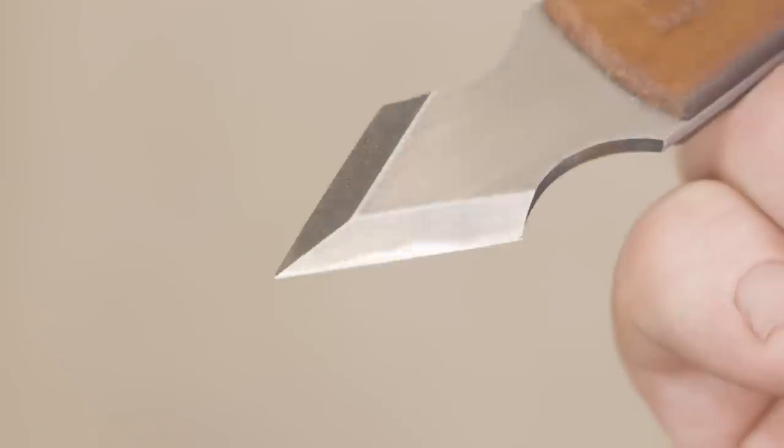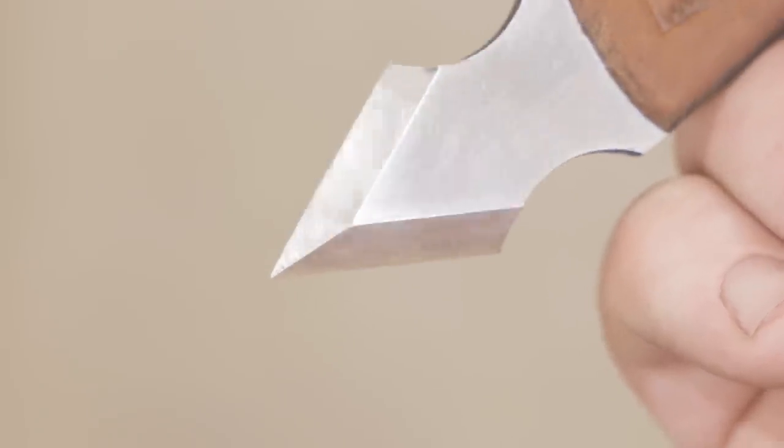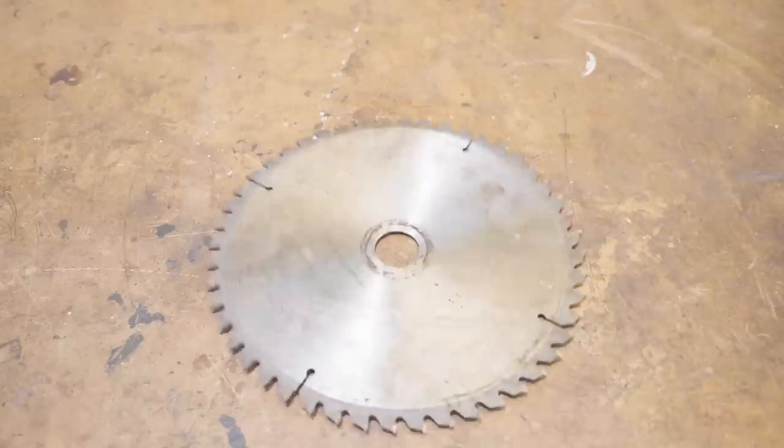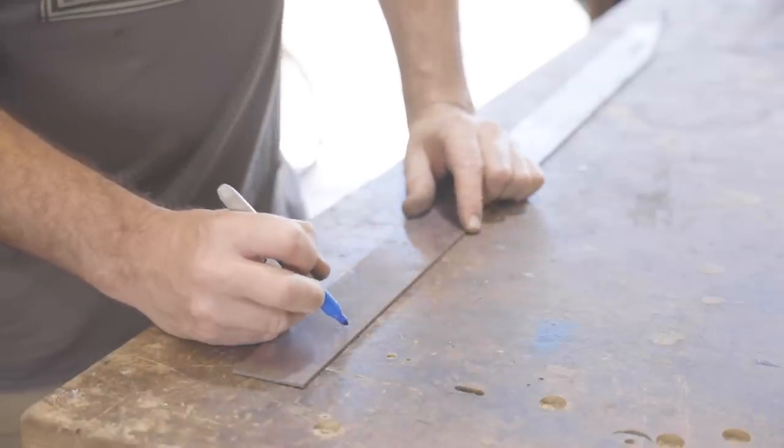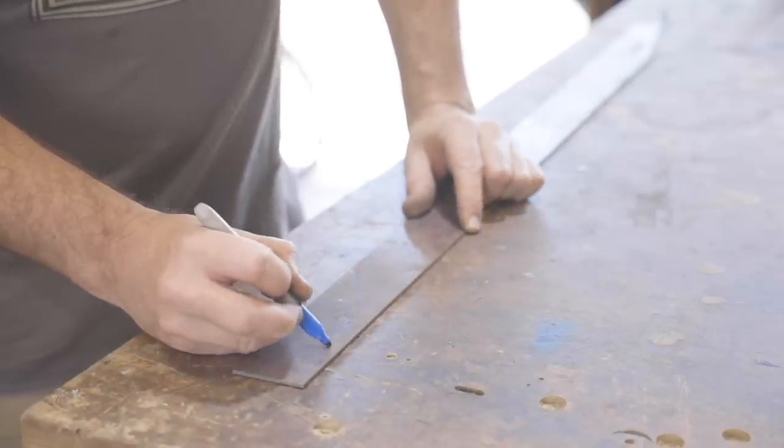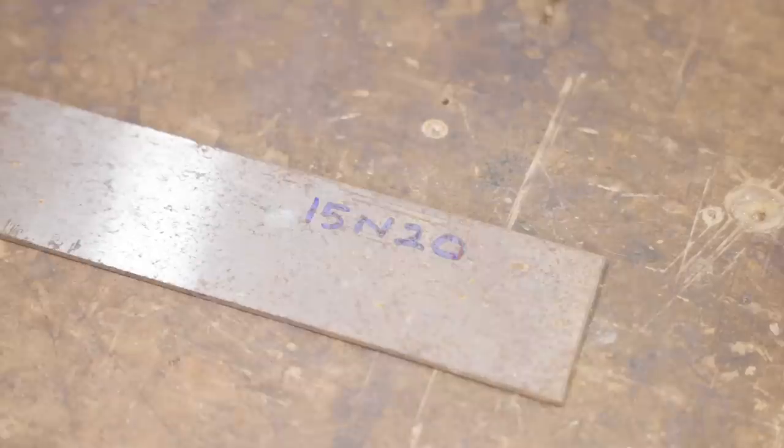For the blade we need a piece of high carbon steel so it can be hardened. There's many items that could be reused like an old file, a circular saw blade, a reciprocating saw blade and there'd be many other things if you put your mind to it. But I'm going to use a piece of 15N20 just because I have it and it's the perfect thickness.